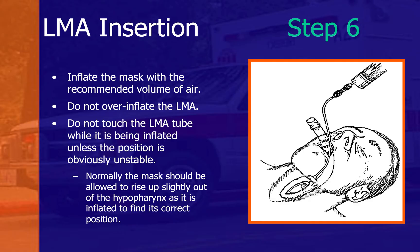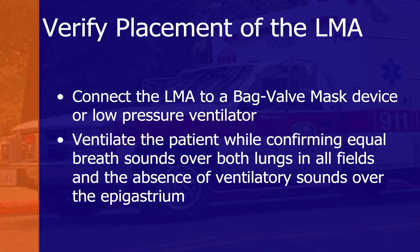Do not touch the LMA tube while it is being inflated unless the position is obviously unstable. The mask should be allowed to rise up slightly out of the hypopharynx as it inflates to find its correct position. Verify placement using bag-mask ventilation or a low-pressure ventilator. Ventilate the patient while confirming equal breath sounds on both sides of the chest.